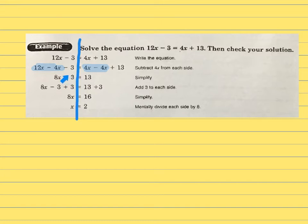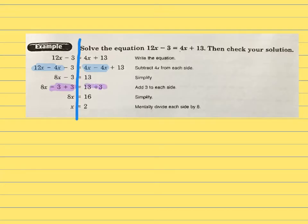Now I have a constant on the left and one on the right. I need to get rid of the minus 3 by adding 3 to both sides — that cancels it out, leaving 8x on the left and 13 plus 3 equals 16 on the right. The last step is to divide both sides by 8, or think: 8 times what is 16? That gives x equals 2.